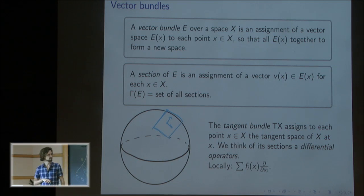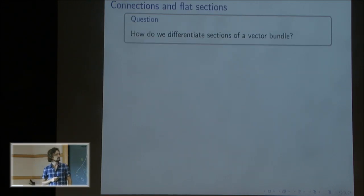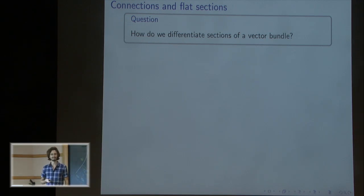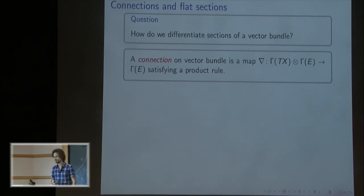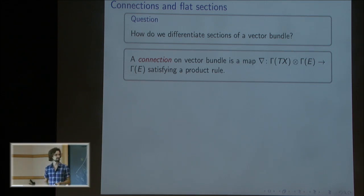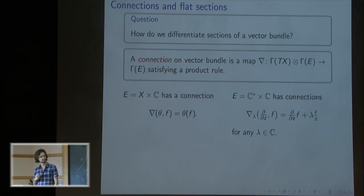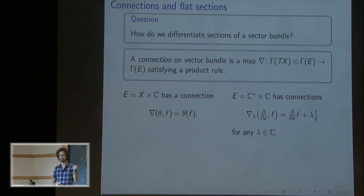Sections are a generalization of functions. The first thing you do with functions is learn how to differentiate them — so can you differentiate sections in the same way? The answer is yes, but you need some additional data, and that additional data is called a connection. A connection is essentially a function that takes in a differential operator (a section of the tangent bundle) and a section of your vector bundle, and spits out another section of that vector bundle, satisfying some obvious axioms for differentiation. For the trivial bundle, you can take the trivial differential — apply a differential operator to a function and get a function back. That is a connection.